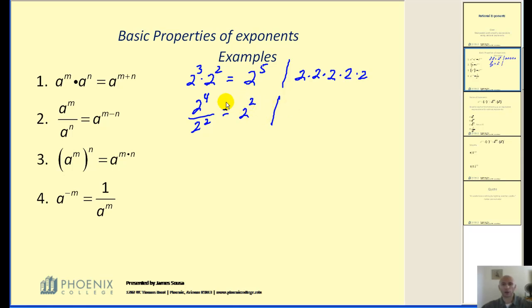If we take a look at it in more detail, two to the fourth power divided by two to the second power, we can easily see that there are some common factors, and we're left with two to the power of two.